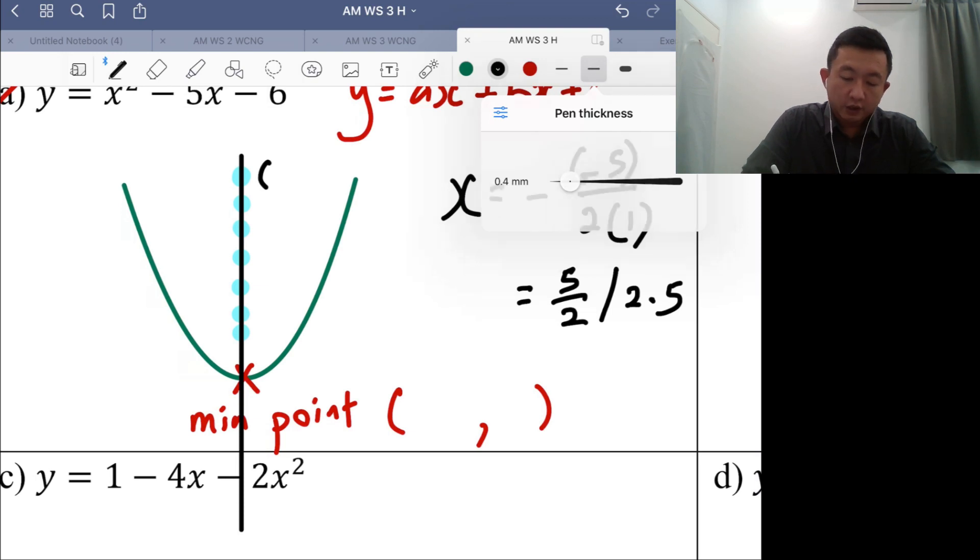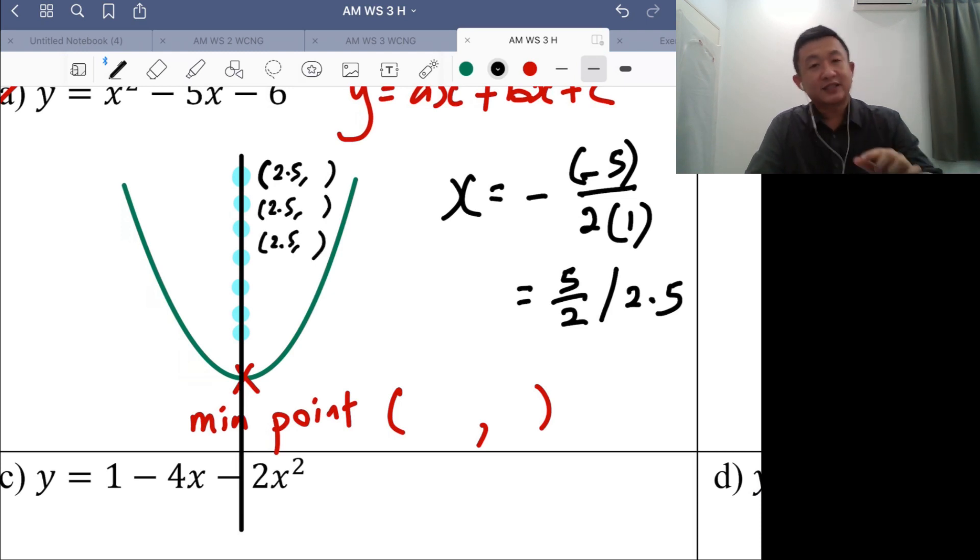You will have 2.5 with a y value. You have another 2.5 with another y value. So all of them share the same x value. That's why we are calling this x equals 2.5 as an equation.